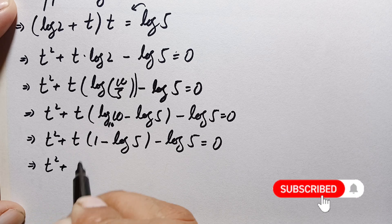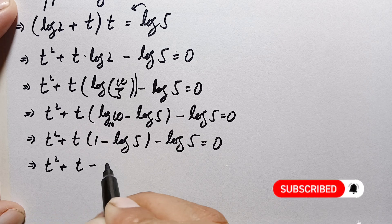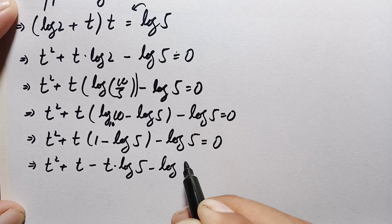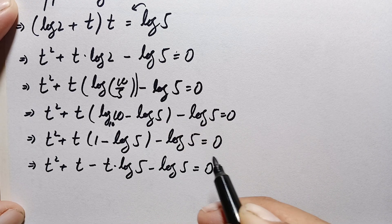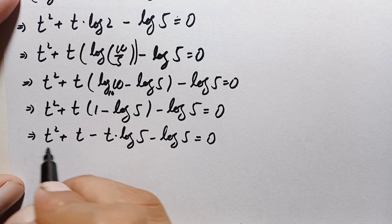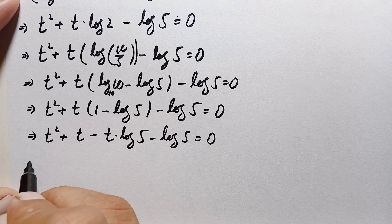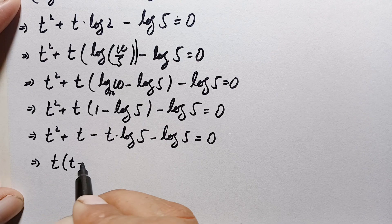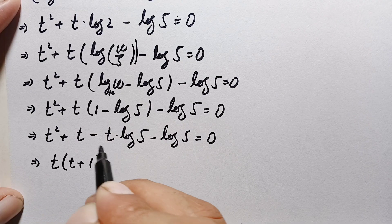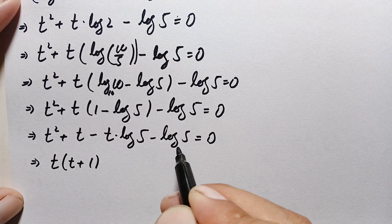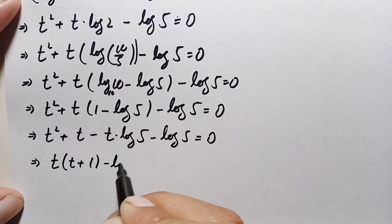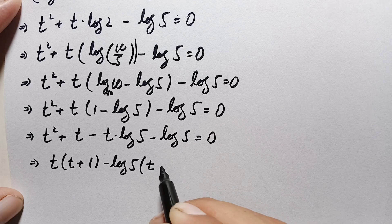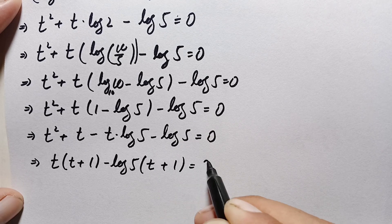Expanding, we get t squared plus t minus t·log 5 minus log 5 equals 0. Looking at these terms, t is common in the first two terms, so taking out t gives t(t + 1), and negative log 5 is common in the last two terms, giving −log 5·(t + 1).